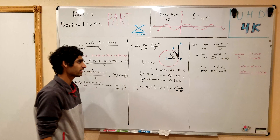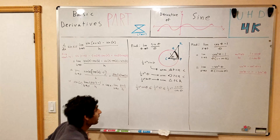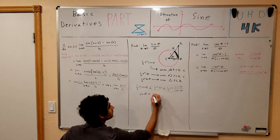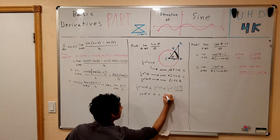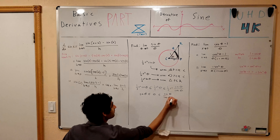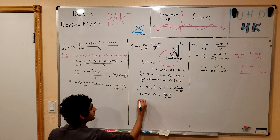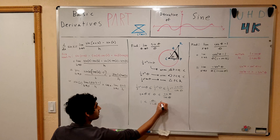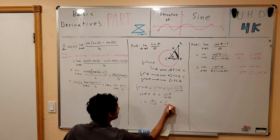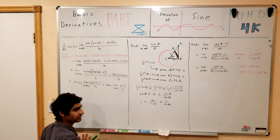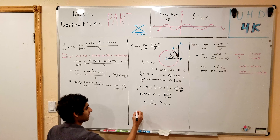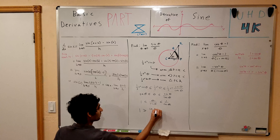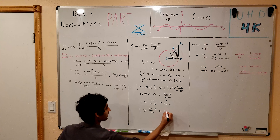Writing tangent as sin theta divided by cosine theta, let's divide the entire inequality by one-half R squared. We get sin theta is less than or equal to theta, which is less than or equal to sin theta over cosine theta. Now let's divide everything by sin theta. We get 1 is less than or equal to theta over sin theta, which is less than or equal to 1 over cosine theta. Taking the reciprocal of everything flips the inequality signs: 1 is greater than or equal to sin theta over theta, which is greater than or equal to cosine theta.